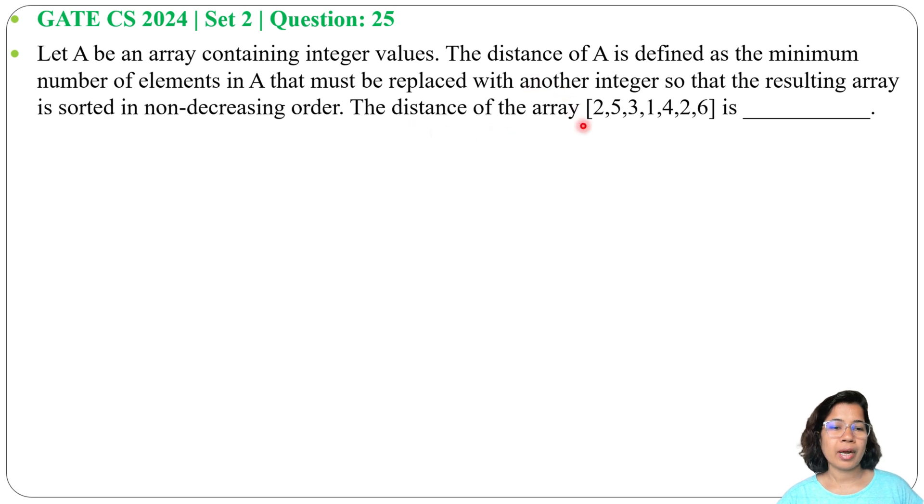So now from this array, first we need to check which integers are already sorted. 2, 3, 4, 6 are already sorted. We need to replace 5, 1, 2, so there will be 3 replacements. That's why the distance of the array is 3.